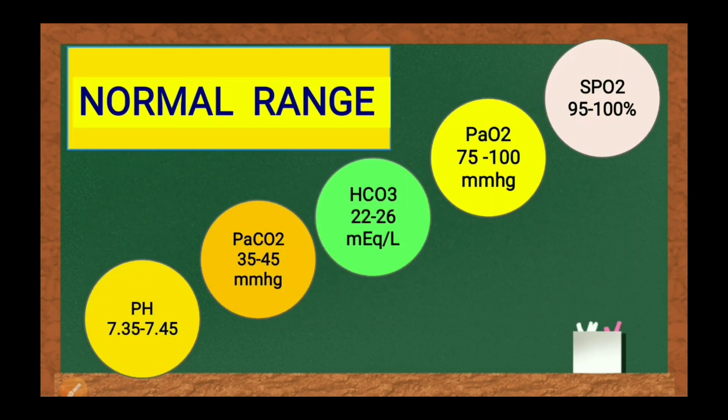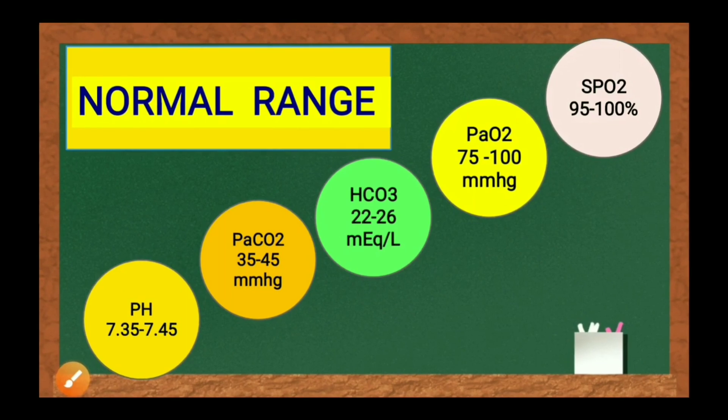Normal range — this is a very important part of the session. These are the typical normal values you need to remember: pH (potential hydrogen) is 7.35 to 7.45; PaCO2 (partial pressure of carbon dioxide) is 35 to 45 mmHg; HCO3 (bicarbonate) is 22 to 26 milliequivalents per litre; PaO2 is 75 to 100 mmHg; and SpO2 is 95 to 100 percent.